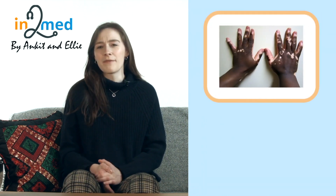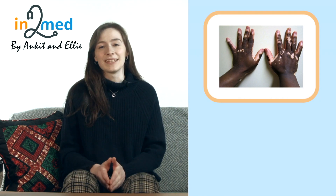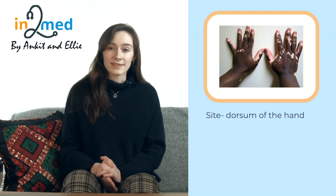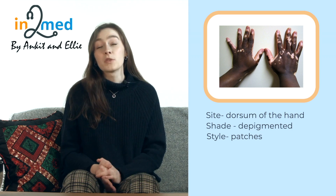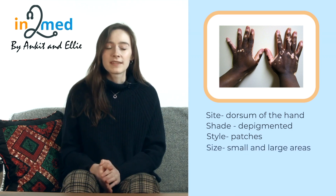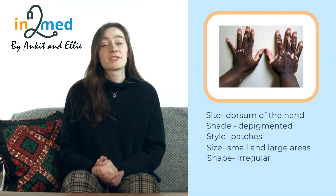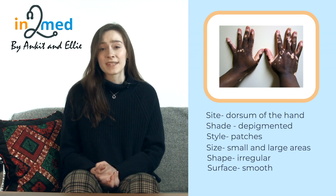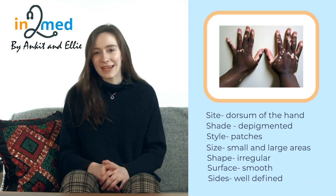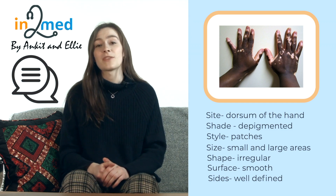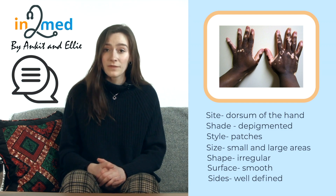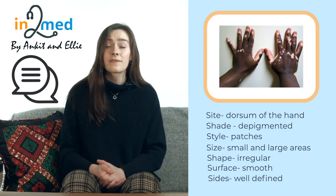Let's have a look at a second case. On first impression this appears to be much harder; however, by using our method, let's see how we can describe it clearly. The site: there are multiple lesions on the dorsum of the hands concentrated at the fingertips. The shade: they're depigmented. The style: multiple patches. The size ranges from a few millimetres to large, almost covering the full thumb. The shapes are irregular. The surface is smooth, with no textural difference to normal skin, and the edges are neat and well defined. Putting this together: 'I'm looking at a photo of the dorsum of both hands showing multiple depigmented patches of skin concentrated on the fingertips. These range from a few millimetres to large, covering almost all of the thumb. The patches are irregular, smooth, and have well-defined edges.' My clinical impression would be vitiligo — and it's as simple as that.